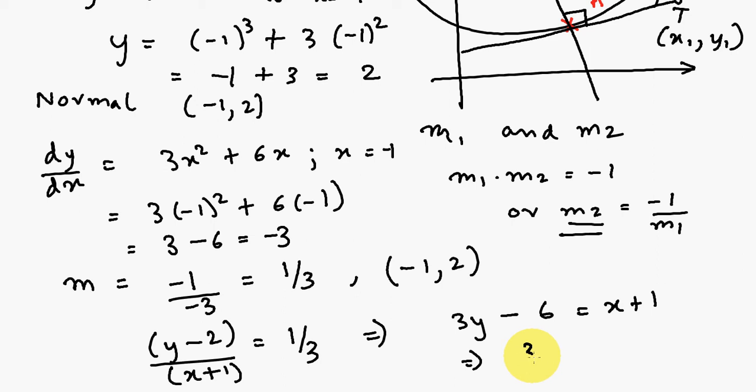Just cleaning it up to make it look good. 3y, this minus 6 goes over to the other side, is equal to x plus 7. What we have over here, finally, this equation is the equation of the normal.